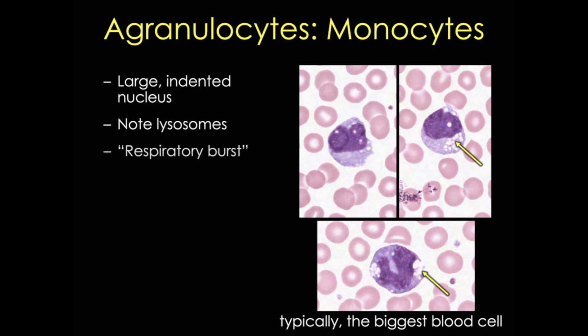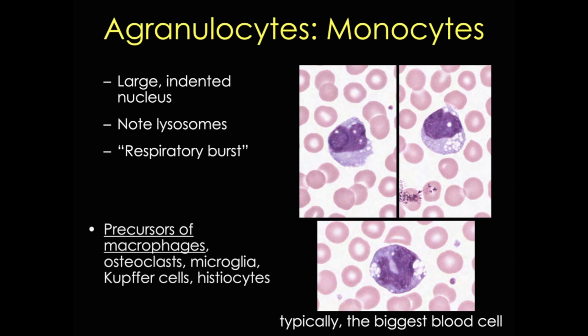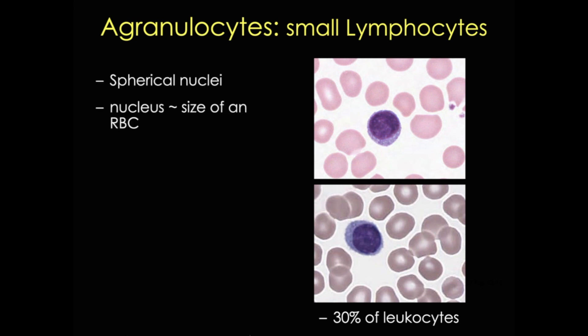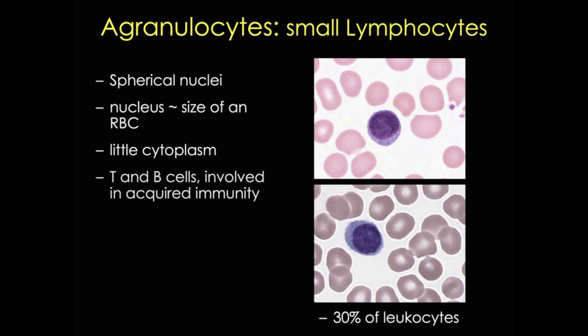Monocytes are the precursors to macrophages, including histiocytes, osteoclasts, Kupffer cells in the liver, and others. Note that all monocyte-derived cells are antigen-presenting cells, so they all play a role in immune defense. The last agranulocyte is the lymphocyte. Lymphocytes are the most numerous agranulocytes and the second most numerous white blood cell. They're also typically the smallest, with a spherical nucleus roughly the size of a red blood cell and very little visible cytoplasm. Lymphocytes can be divided into functional groups by distinctive surface molecules — these are our T cells and B cells that play important roles in acquired immunity as well as having some innate immune functions.